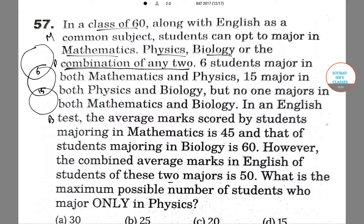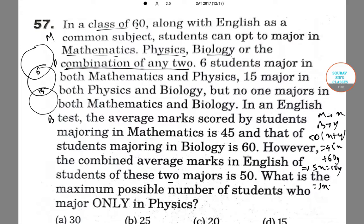Let the students majoring in Mathematics be X, and in Biology be Y. The combined average marks is 50. So the total marks equation gives us: 50 into (X plus Y) is equal to 45X plus 60Y. From here, we get 5X is equal to 10Y, or X is equal to 2Y.